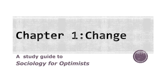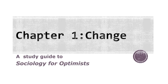This is a study guide for Chapter 1 of Sociology for Optimists by Mary Holmes, published in 2015. The chapter is called Change. These study guides are meant to point out some important concepts of interest to introductory students. They are not designed to be thorough or provide an in-depth discussion. The purpose of this book is to look at the ways sociology can provide a basis for optimism, so discussions of pessimism and optimism will be central to this guide.